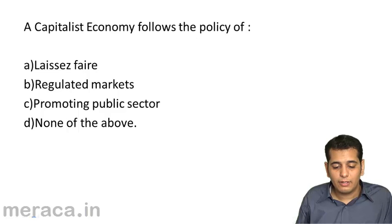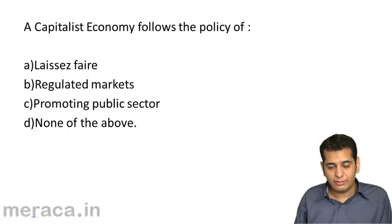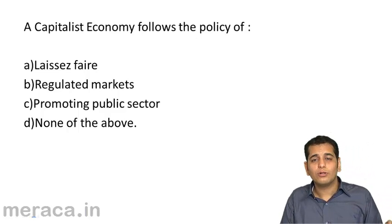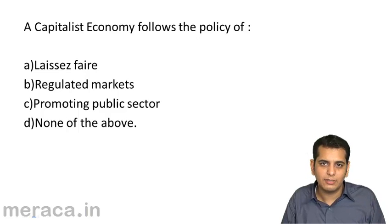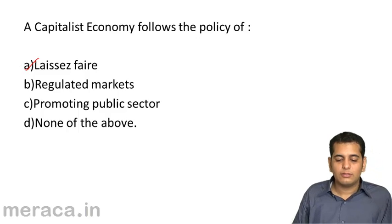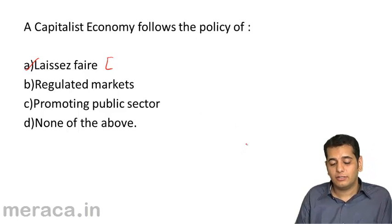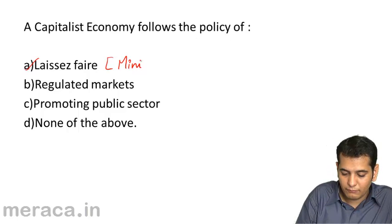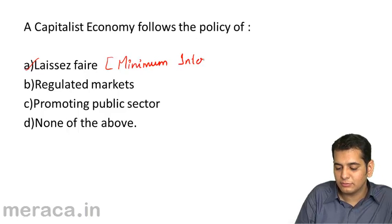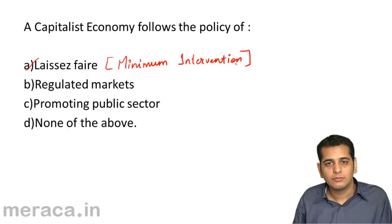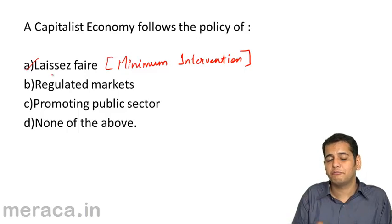A capitalist economy follows the policy of — a — laissez-faire, b — regulated markets, c — promoting public sector, or d — none of the above. A capitalist economy has no government restrictions and minimal policies framed by the government, so it follows the laissez-faire policy. Laissez-faire means minimum intervention by the government.